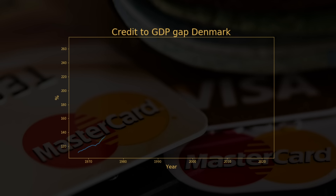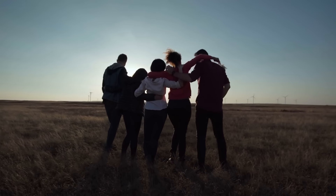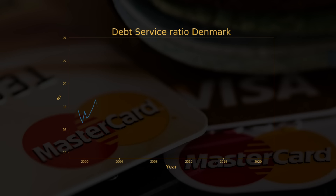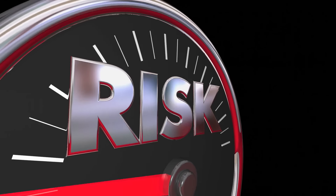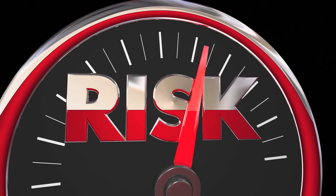That being said, when looking at debt numbers like this, we do have to take into account that interest rates are indeed at an all-time low. This means that higher debt levels could be sustainable. Even though debt has increased, debt service costs have gone down considerably in Denmark along with falling interest rates. That means that what looks like a bubble might actually be sustainable as long as interest rates stay ultra low.